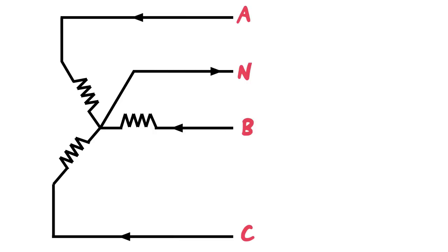The neutral carries the unbalanced current. So we're going to see what happens in a three-phase system. It's the same principle - it does carry the unbalanced current.